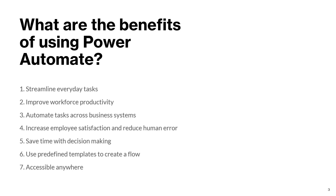Automate tasks across business systems. Power Automate has a number of connectors which will help you connect to different systems and process your workflows. You can create processes to do almost anything — if you want to do something with an online service, yes you can do that. If you want to create an automation on some desktop app or web portal, all of these things can be achieved using Power Automate.